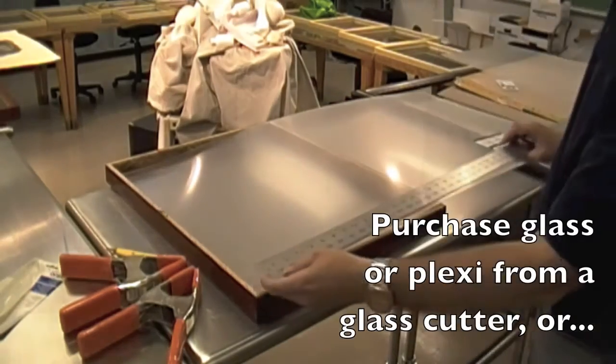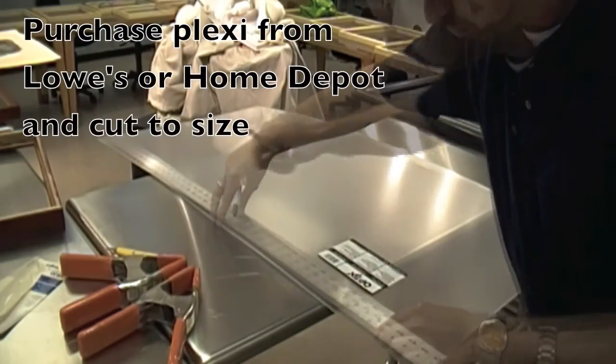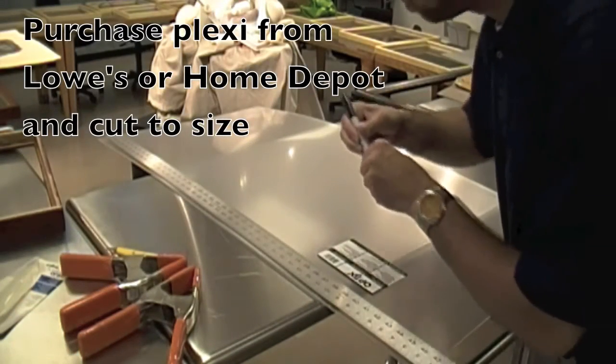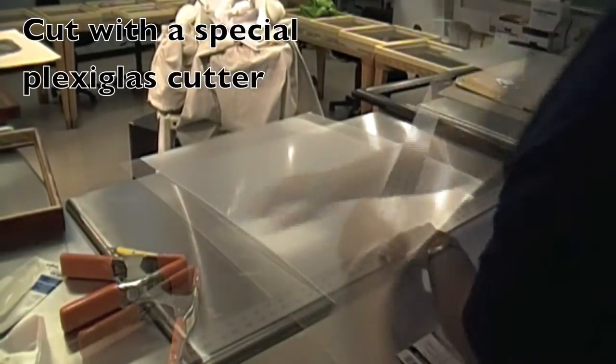You can also buy cut glass from a glass cutter, but it's easy to pick up plexiglass from a home goods store like Home Depot or Lowe's. Here you can see I'm marking it and measuring it.